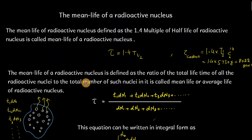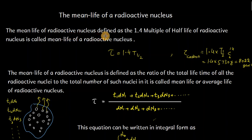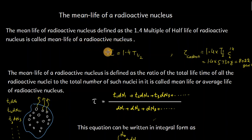Bismillahirrahmanirrahim. Assalamu alaikum dear students. Today we will discuss the mean life or average life of a radioactive nucleus. The mean life of a radioactive nucleus is defined as 1.4 times the half life of the radioactive nucleus. Mean life is denoted by tau, which is equal to 1.4 multiplied by the half life of the nucleus.